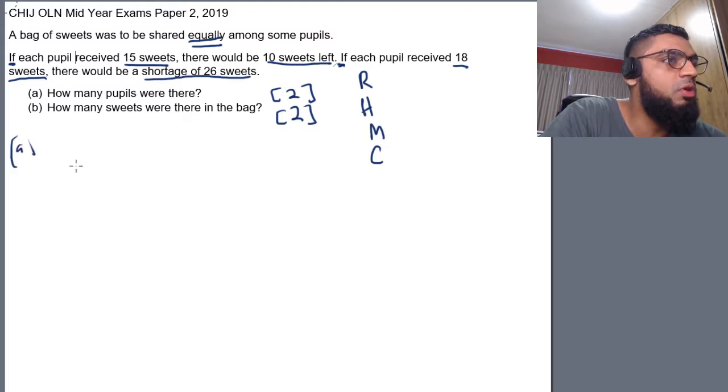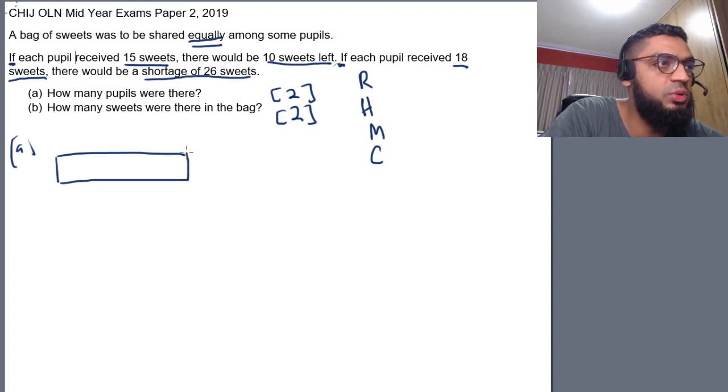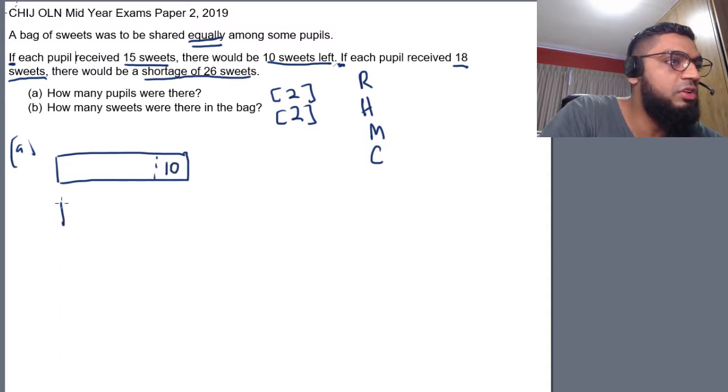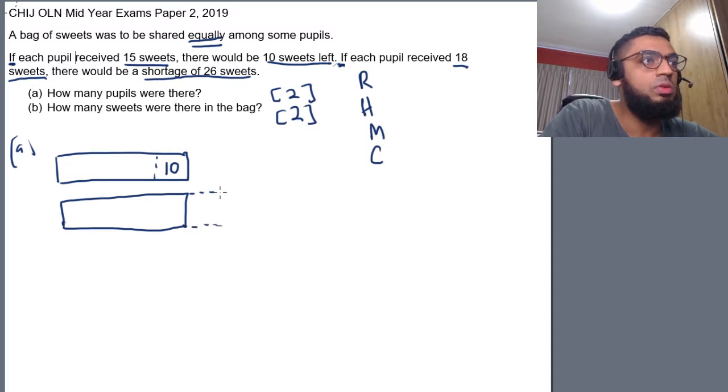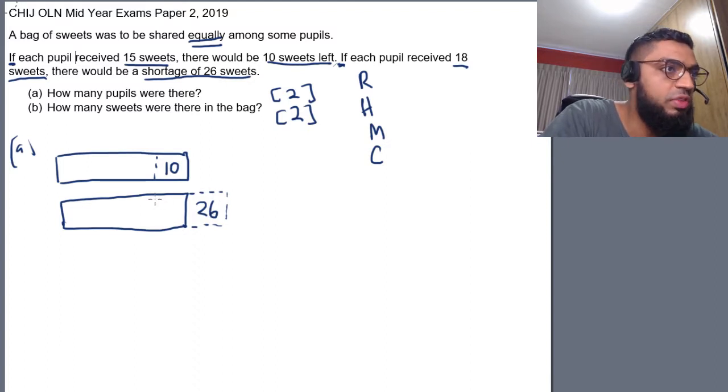For part A, the first model is for the excess case. Let's say this is actually the actual number of sweets that this bag contains. For the first one, if I were to give 15 sweets, there will be 10 sweets left. And for the second model that I draw, I draw the same length, but this time round, there will be an extension because if you were to give 18 sweets, there will be 26 sweets that is short. So, over here is 10 still.